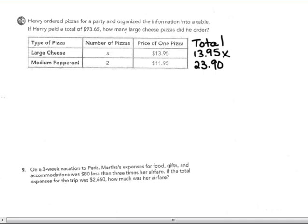He ordered two medium pepperoni pizzas for $11.95. So two times $11.95, he spent $23.90 on the medium pepperoni pizzas. All together, he's paid $93.65. So my medium pizzas of $23.90 plus $13.95 for each, times X, each large cheese pizza, all together, Henry, who was ordering them maybe for his, you know, lacrosse party or something, or his birthday party, spent $93.65.